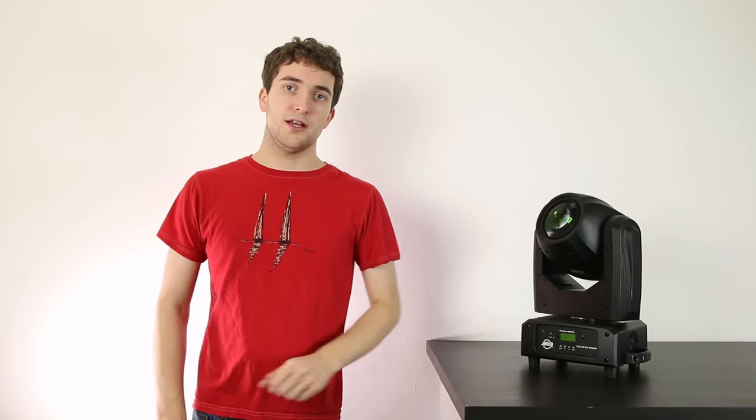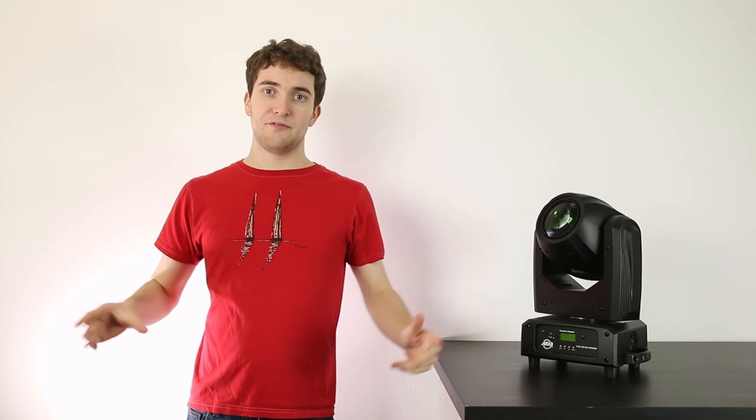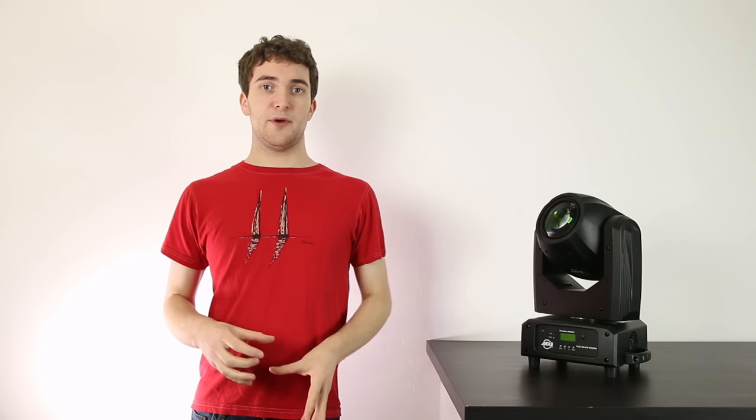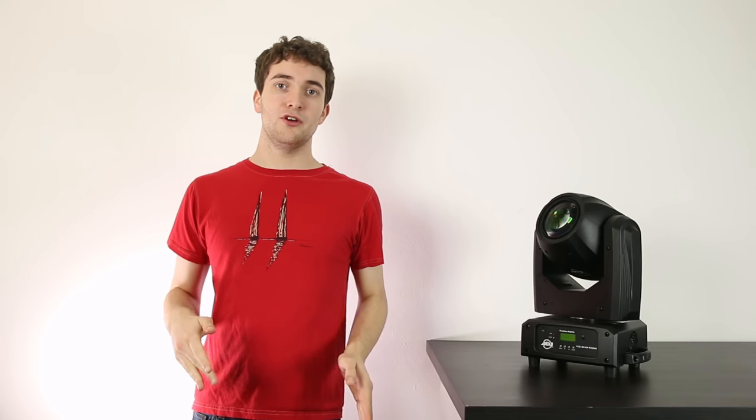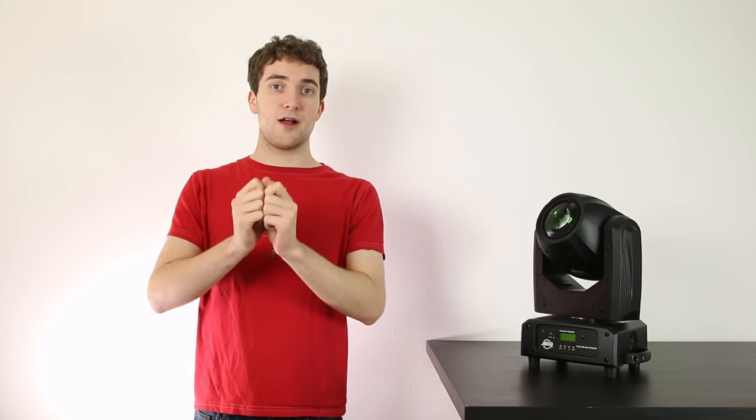Tip number two is to do with rigging your lighting fixtures along your T-bar or truss. If you use the same rig every single gig with your lights in the same positions, sometimes when setting up it can take quite a while to work out exactly where each fixture needs to be positioned. To save time during setup, you can wrap some electrical tape around your truss.